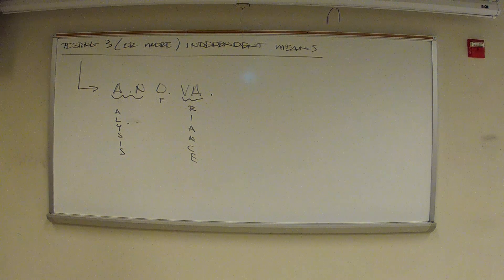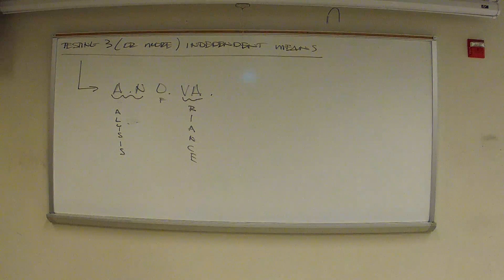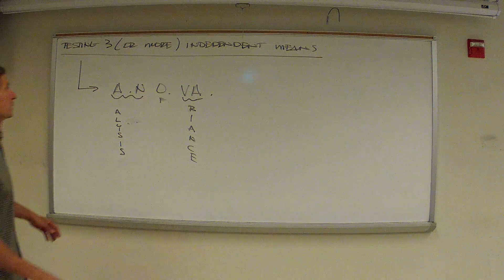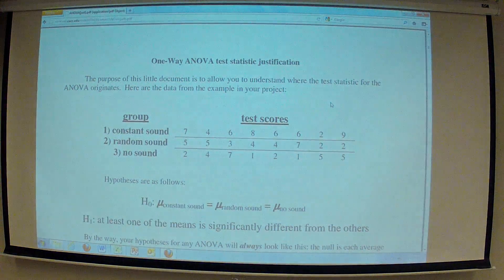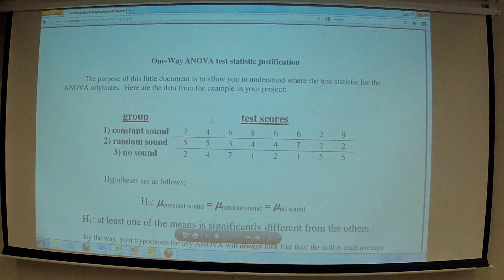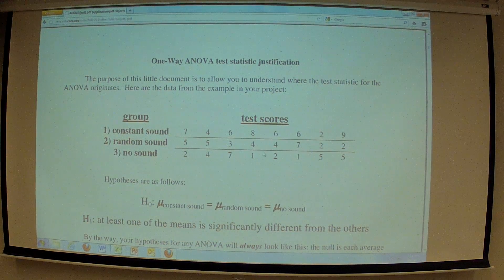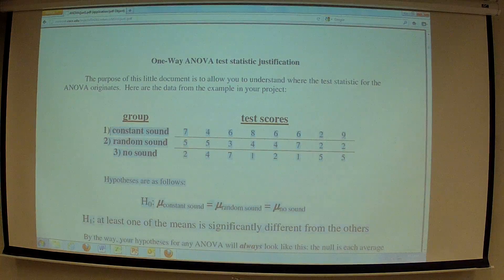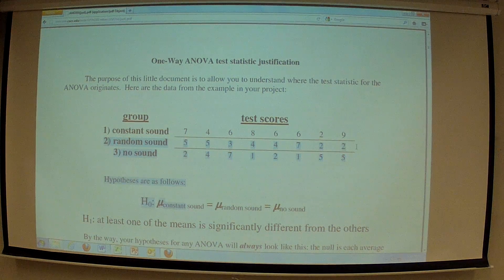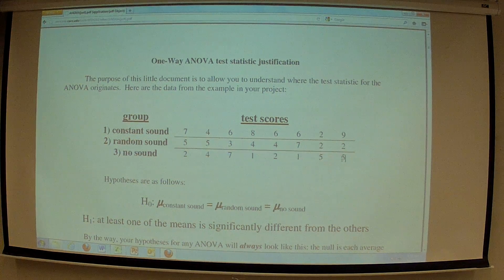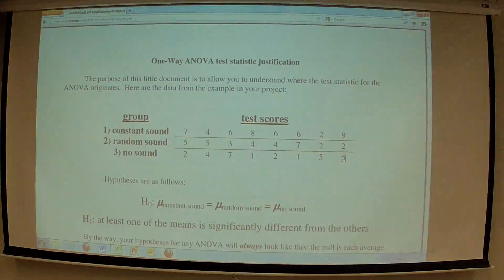So, you've got your data. You've got your data in front of you. How are we going to test it? Well, I'll show you, and then we'll never do this. Here are your data scores, like we have right now. You've got the constant sound group, you've got the random sound group, and you've got the no sound group. You know what? Before we go any further, let's pause this. Grab those data. Put them into three lists on your TI.